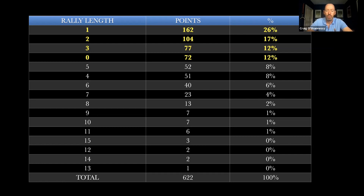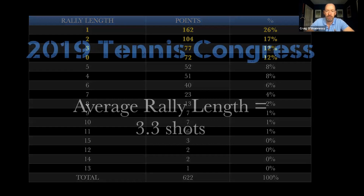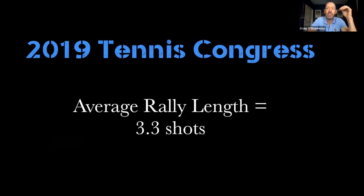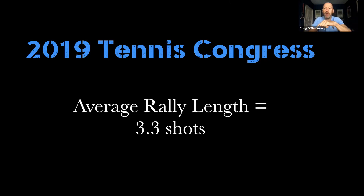The average rally length for the recreational players was 3.3 shots. This needs to be your guide on how you organize your practice court. Before we had data, we did it backwards — we started on the practice court, worked out, and then went to the match court to see if we could win. Let's flip that: start with match court data, then go to the practice court and say, this is how I need to organize my practice. Club players are simply not practicing in a way that maximizes their opportunity to win tennis matches.